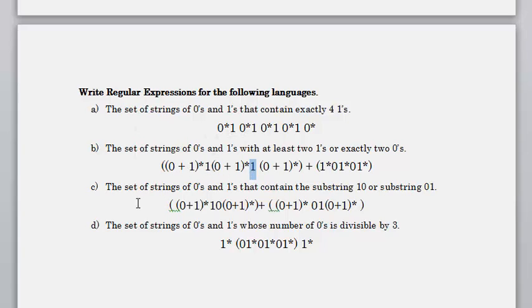For strings containing the substring '10' or '01': we place '10' and '01' in the expression, and use (0|1)* at the beginning and end since we don't care what comes before or after. Whenever we don't care what the input is at the beginning or end, (0|1)* is always used — as you've seen in all these examples.